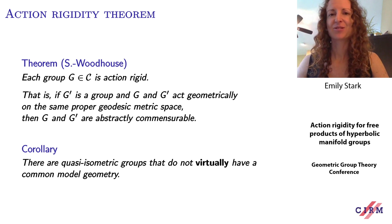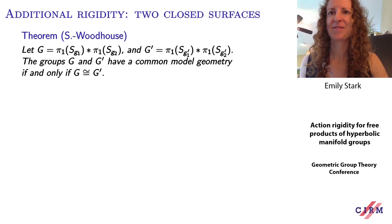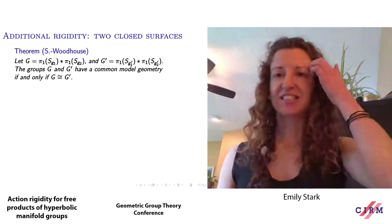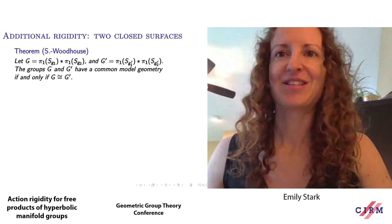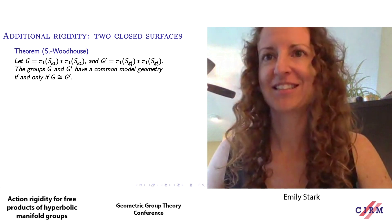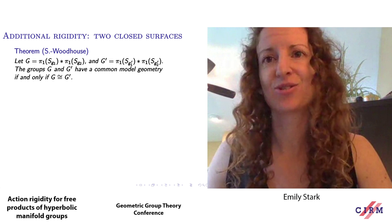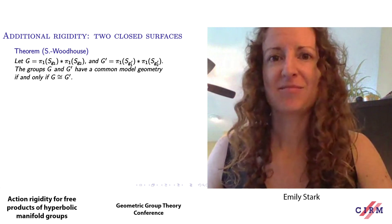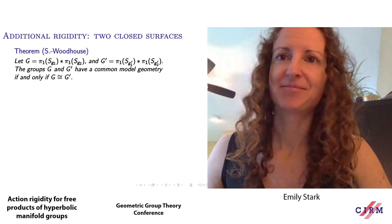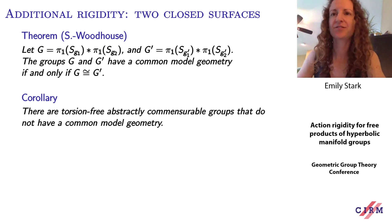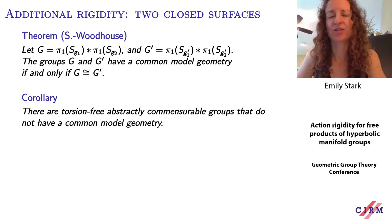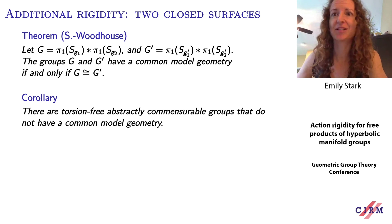The converse to this theorem also fails: it's not true that commensurable free products of manifold groups always have a common model geometry. We obtain additional rigidity if the free products have exactly two factors, both surface groups. Let G and G prime be free products of the fundamental group of closed surfaces of genus at least 2. Then G and G prime have a common model geometry if and only if they're isomorphic. As a consequence, we have the first examples of torsion-free abstractly commensurable groups that do not have a common model geometry. In other words, having a common model geometry is not a transitive relation, even among torsion-free groups.